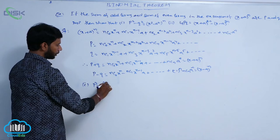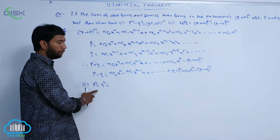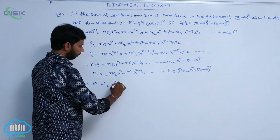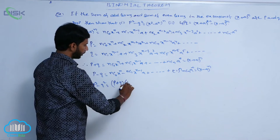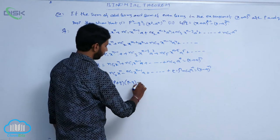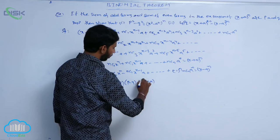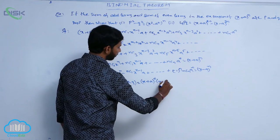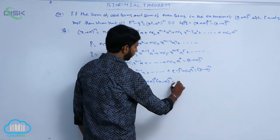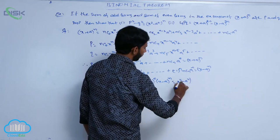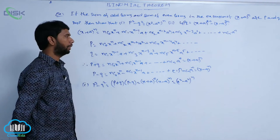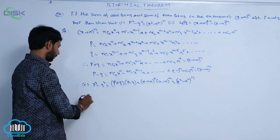For the first bit: p² - q² is of the form a² - b², which can be written as (p + q)(p - q). Here p + q = (x + a)^n and p - q = (x - a)^n, so p² - q² = (x + a)^n * (x - a)^n = (x² - a²)^n. This proves the first bit.